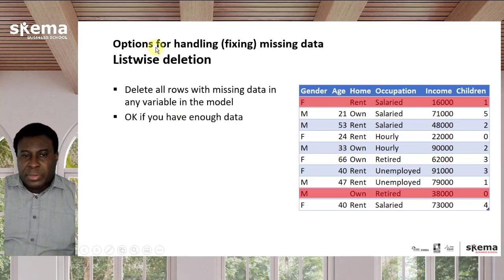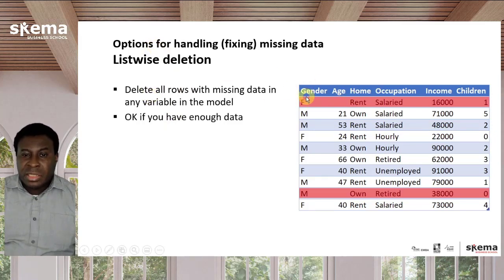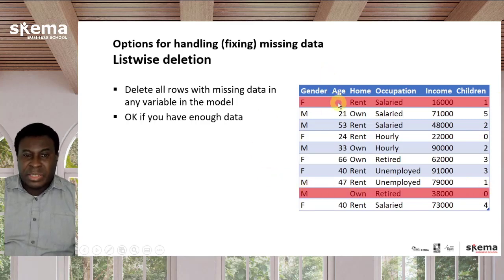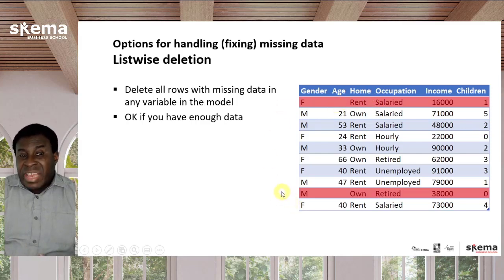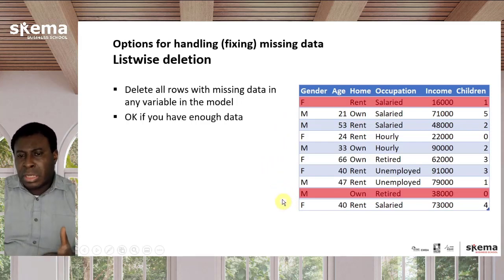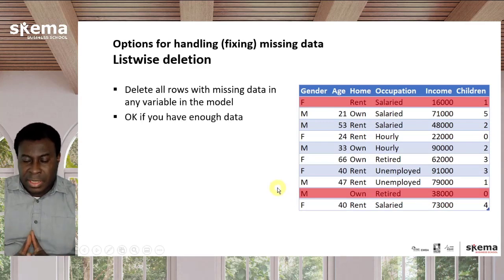The first option is to delete the entire row each time anything is missing in that row — listwise deletion. If the variable is very important where data is missing, and if you have enough data so that you're only losing 1% or 2% of your data, that could be an acceptable way to handle missing data.